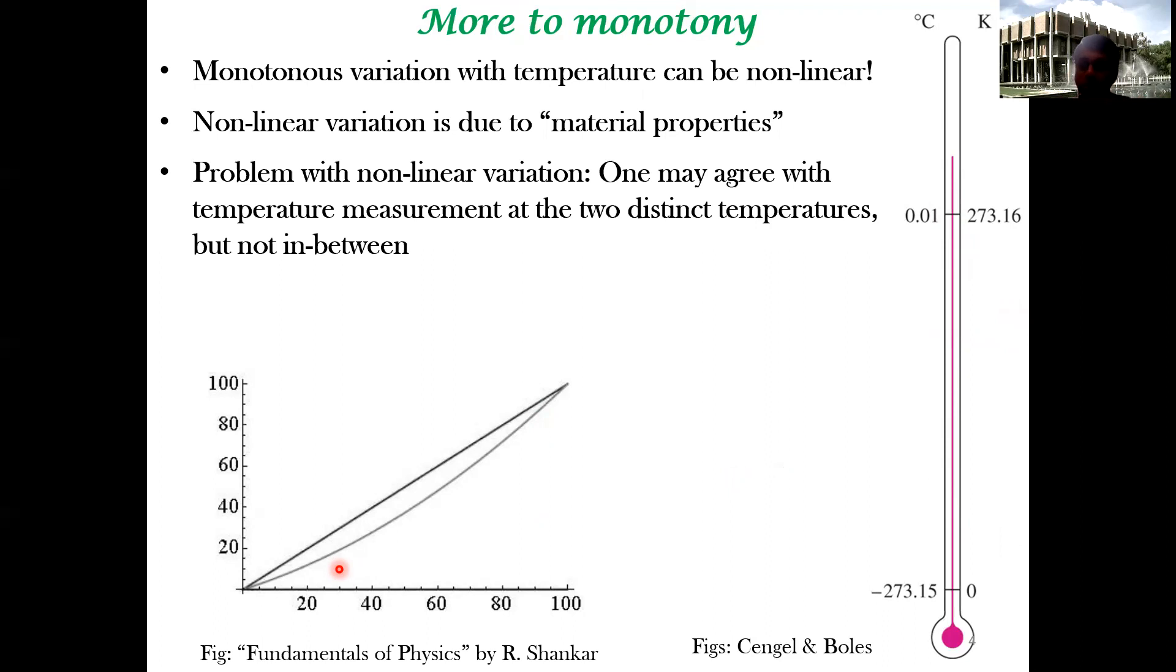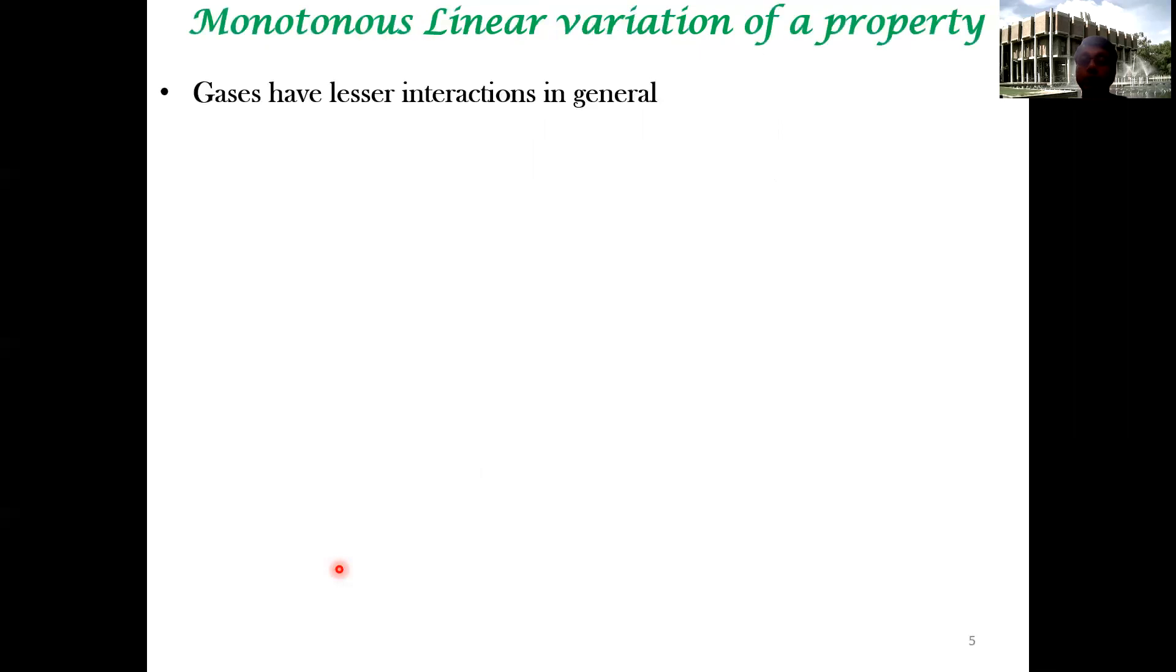What do you do? We want to fix this and we want to have a linear variation. It has to be monotonous for sure, but it has to be linearly varying with temperature. What kind of a fluid you want to be looking at? The fluid should be a gas, because gases have lesser interaction in general. So it fixes - there's no material property which determines the non-linear interaction. Gases are a better, more suitable fluid.